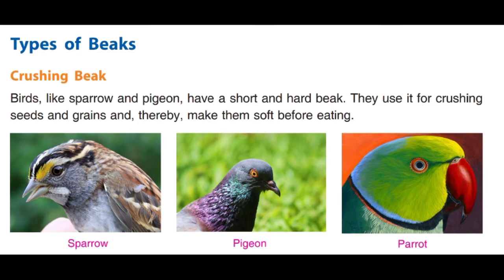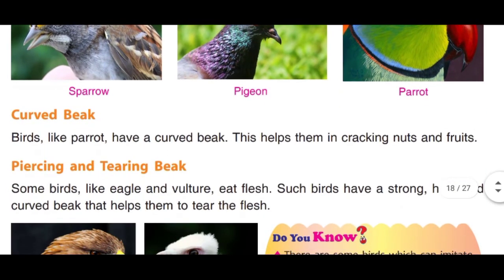The first type is the crushing beak. Birds like sparrow and pigeon have a short and hard beak. They use it for crushing seeds and grains, making them soft before eating. Sparrow and pigeon jaisi birds apne anaj ke daane ko chote tukdon mein tod deti hain — crush kar deti hain — usse khane se pahle soft banane ke liye.